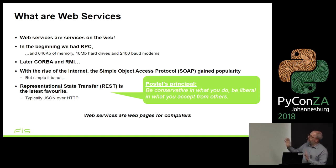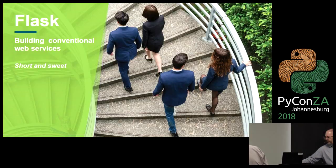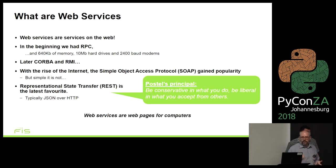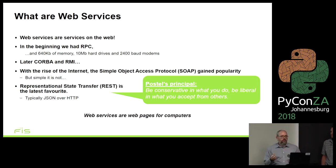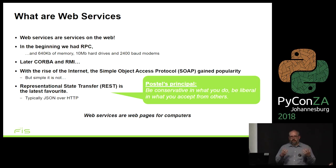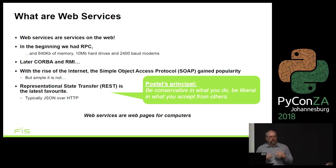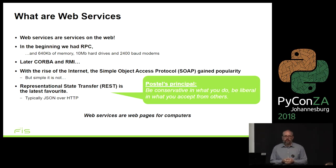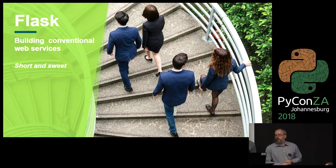Web services are really just web pages that applications can connect to and get data from. Postel's principle is the idea that you must be conservative in what you send out to people but very accepting in what you receive. The problem is when you have lots of versions of clients - especially cell phones connecting to your application - you have many different schemas. So don't change what you're sending out too often, but when accepting data be very accepting and pick the bits you need. In network security this is the enemy, but for application data transfer it's a very useful principle.